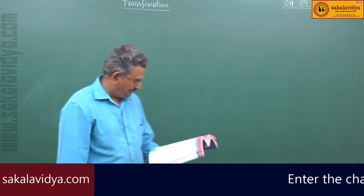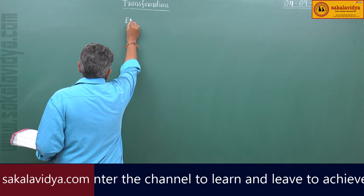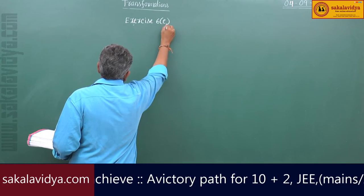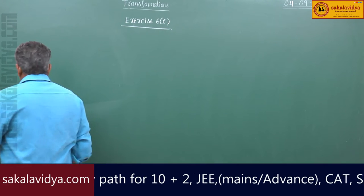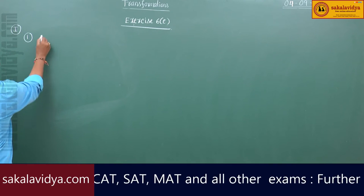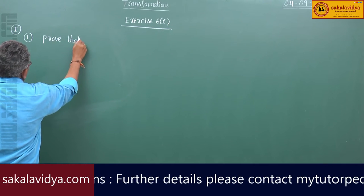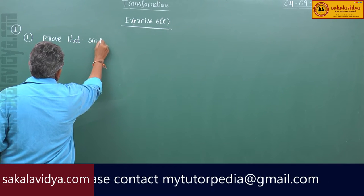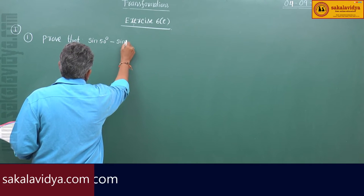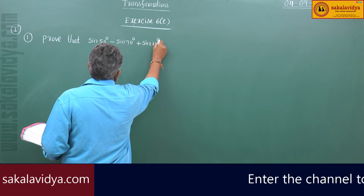Exercise 6E, first section, first problem. Prove that sin50° minus sin70° plus sin10° is equal to 0.